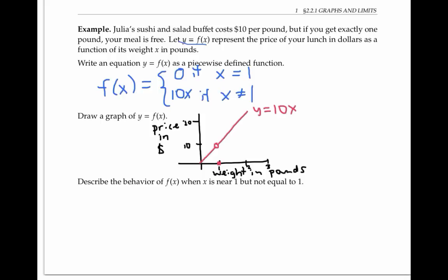Now, when x is near one, but not equal to one, then the f of x values — that is, the y values — are very close to 10. In the language of limits, we say that the limit as x approaches one of f of x is equal to 10. More informally, we can write: as x approaches one, f of x approaches 10.